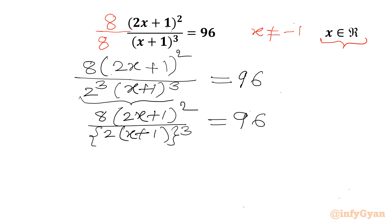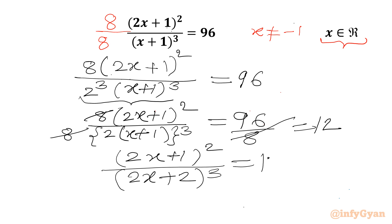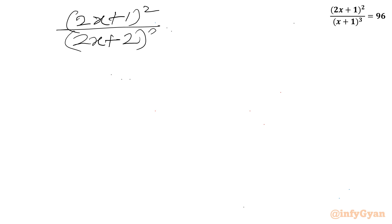Now I can divide both sides by 8, giving us 12 on the right. The LHS becomes (2x + 1)² over (2x + 2)³ equal to 12. Let me write that clearly: (2x + 1)² over (2x + 2)³ equal to 12.